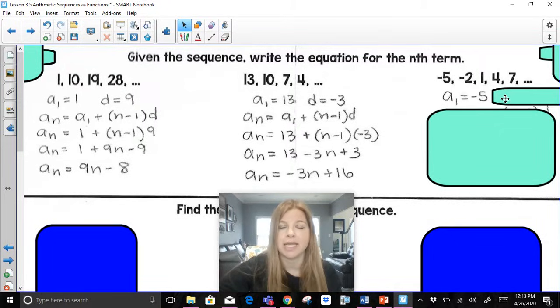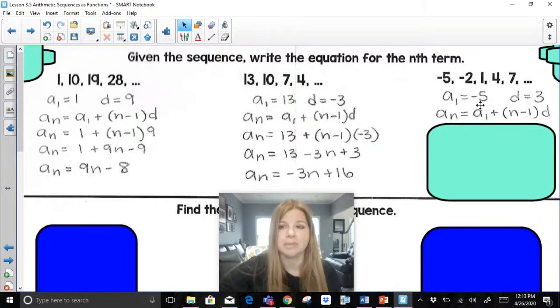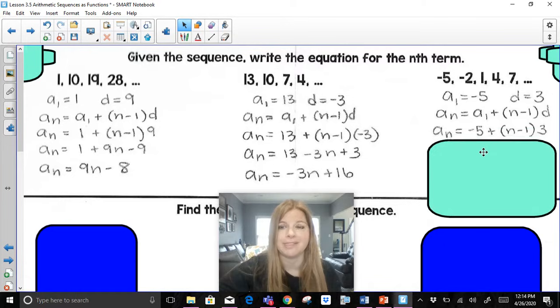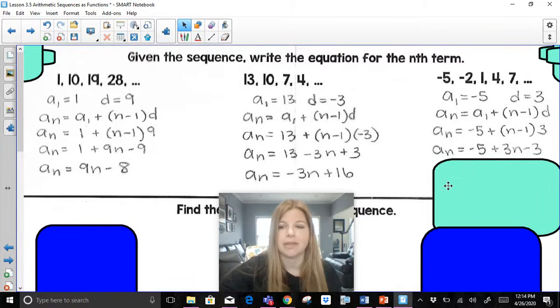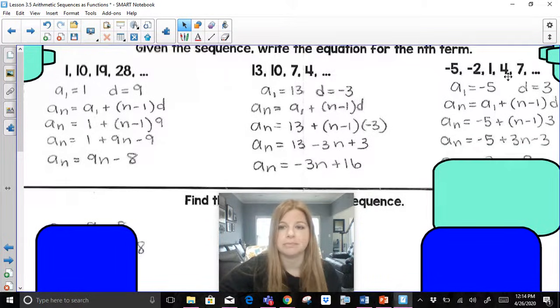Last one. My a sub 1 is negative 5. My common difference d is 3. I get to go ahead, substitute my a sub 1 in for my negative 5 in for that a sub 1. My d is 3. I'm going to go ahead, distribute that 3, and then combine my like terms.